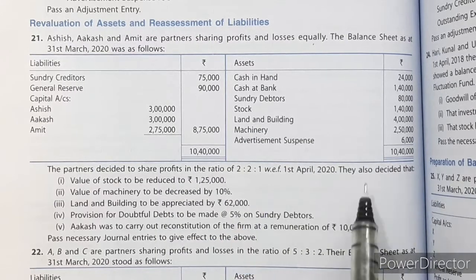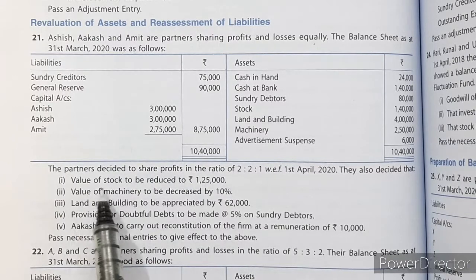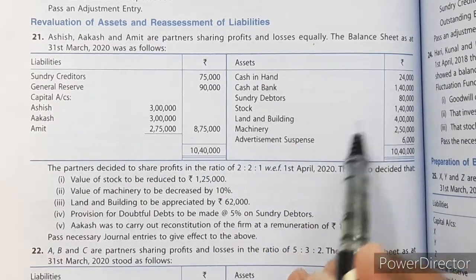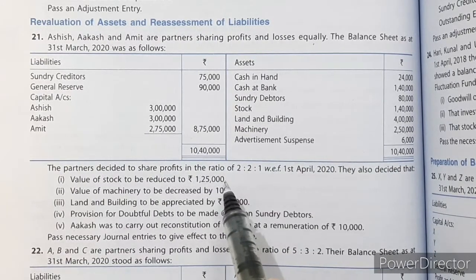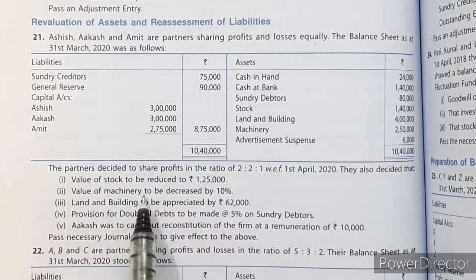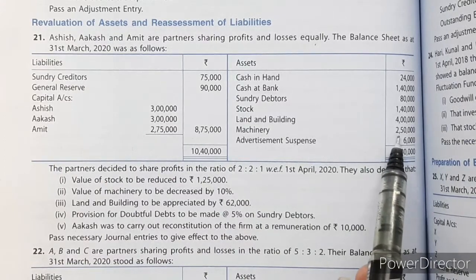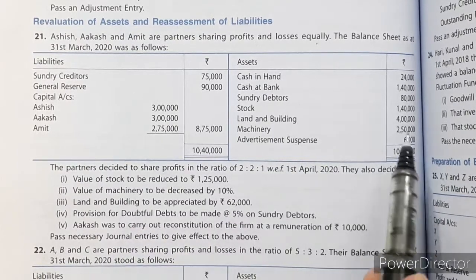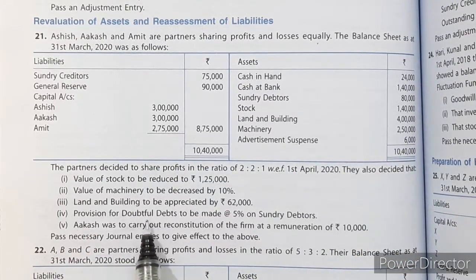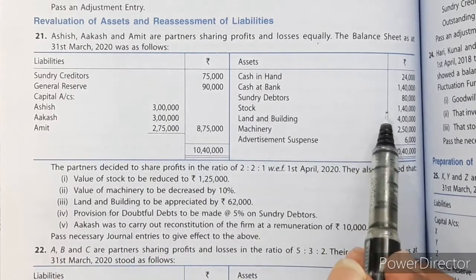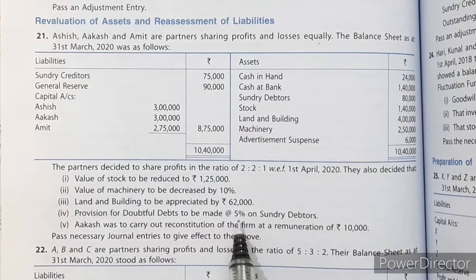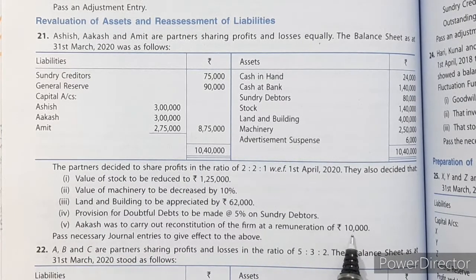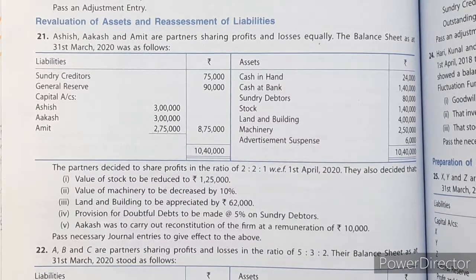The partners decide to share profits in the ratio of 2:2:1 with effect from 1st April 2020. The decisions include: value of stock to be reduced to Rs. 1,25,000 (from Rs. 1,40,000, so a decrease of Rs. 15,000); value of machinery to be decreased by 10% (machinery is Rs. 2,50,000, so decrease of Rs. 25,000); land and building to be appreciated by Rs. 62,000; provision for doubtful debts to be made at 5% on sundry debtors of Rs. 80,000 (i.e., Rs. 4,000); and Akash was to carry out reconstruction at a remuneration of Rs. 10,000.